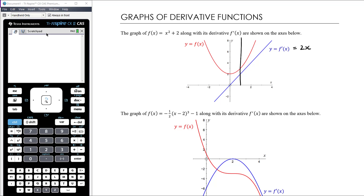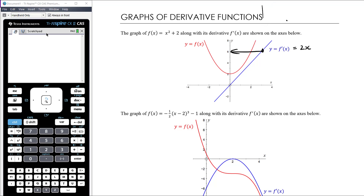When x equals 1, the red graph tells us y equals 3, but the blue graph tells us the gradient of the red graph is 2. Further along, at a larger x value, the gradient of the red graph is about 6 — and that's exactly what the blue graph shows at that point. The blue graph describes the gradient at every point: for the blue graph the x-axis is x values and the y-axis is gradient.